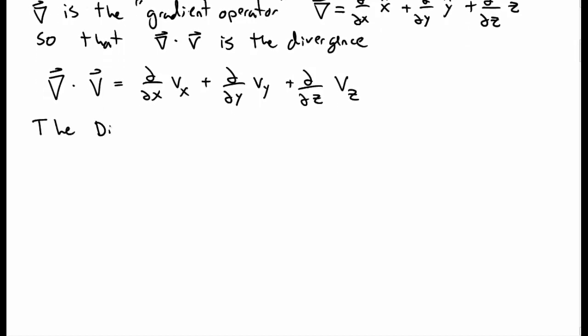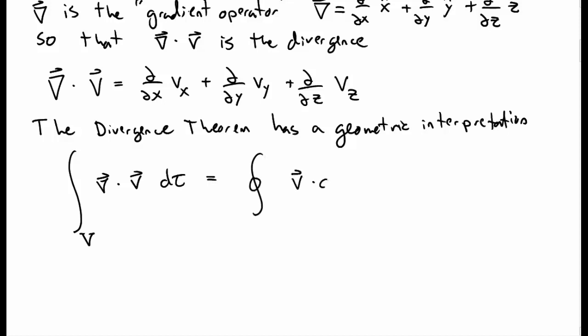So the divergence theorem has a nice geometric interpretation that you can think of for why it must be true. So let's rewrite the divergence theorem, which is that the integral over a volume of the divergence of v is equal to the closed surface integral of v dot dA.